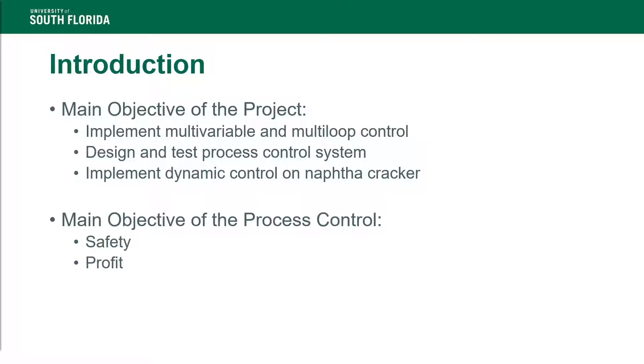The main objective of the project was to design, implement, and test multivariable and multi-loop control schemes such as feedback, feedforward, and cascade control to the NAFTA cracking furnace.